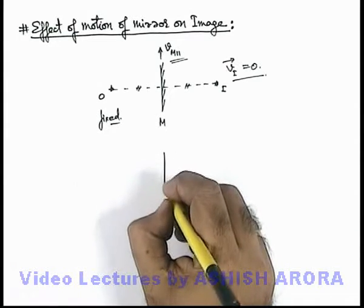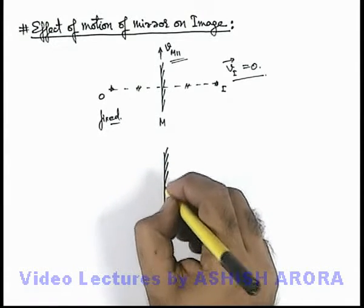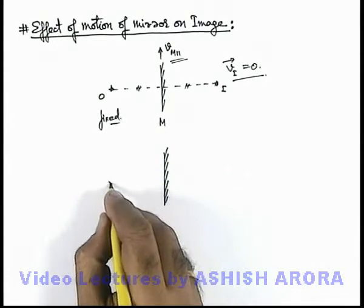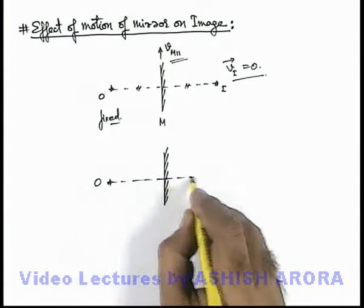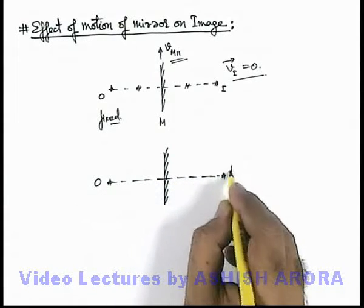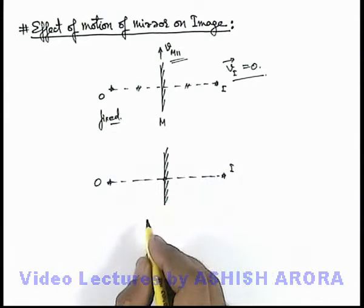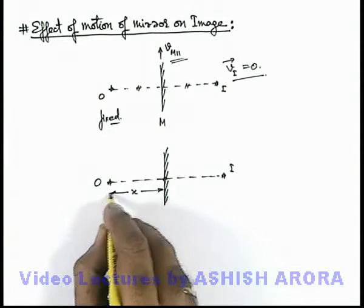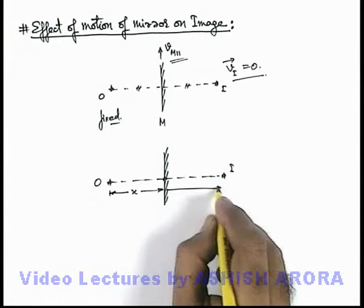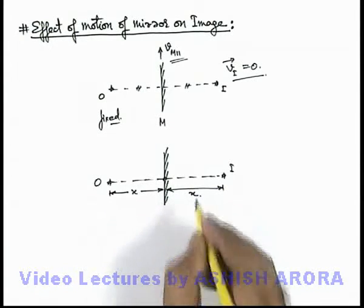And say if the situation is slightly different that mirror is moving perpendicular to itself. If this is the position of object corresponding to which the image is produced behind the mirror, in this situation let us consider object is located at a distance x in front of mirror and image is also produced at the same distance x.